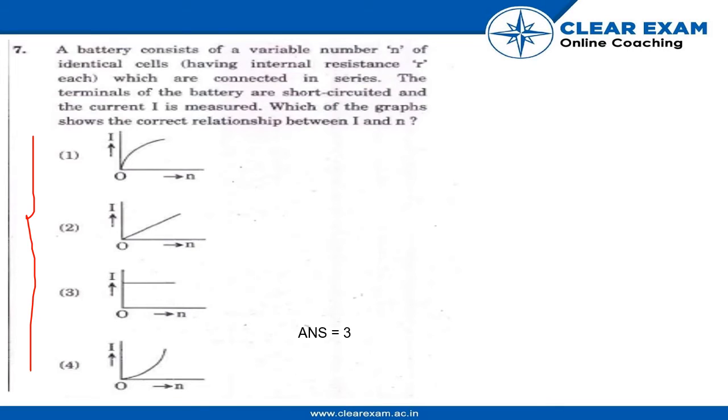Okay, so the correct option is three. But why? Here i is equals to nE over nr, that is equals to E by r.